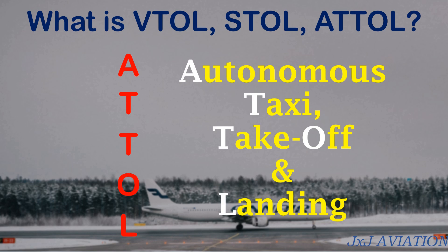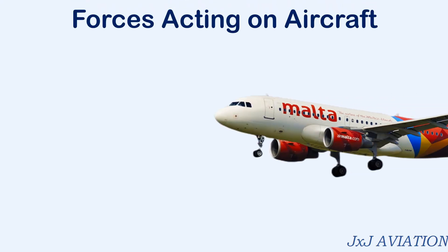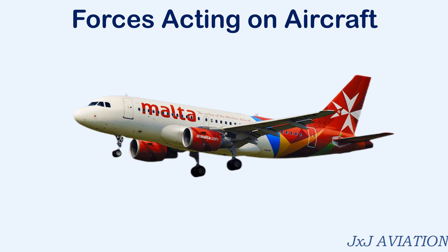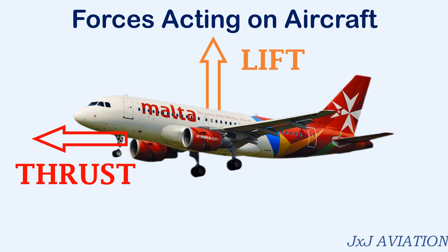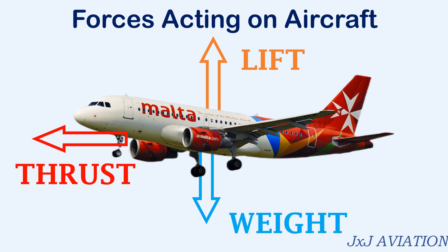Before we see what these terms mean, let's understand how different forces are acting on a normal commercial aircraft in flight. The force acting in the forward direction is the thrust force, the force acting upward is the lift force, the force acting downward is the weight force, and the force acting backward is the drag force.